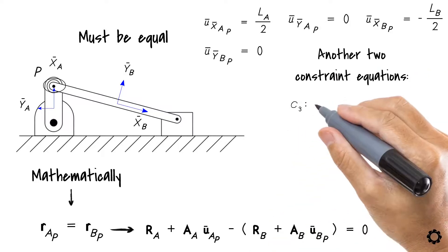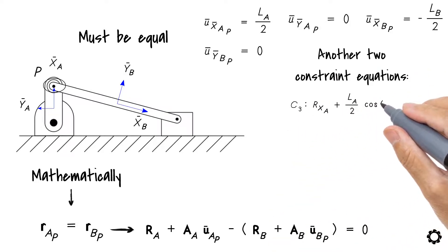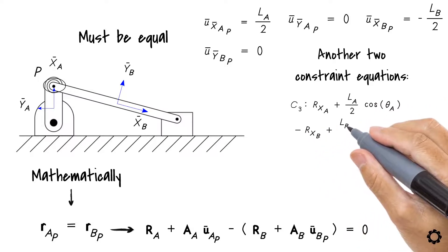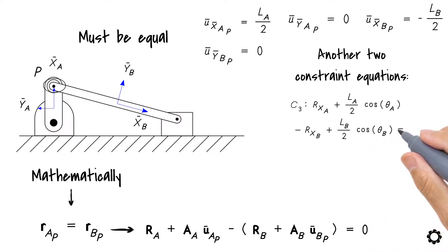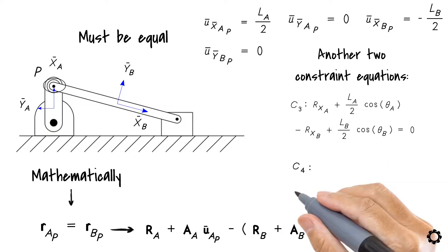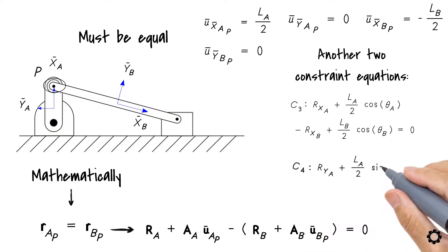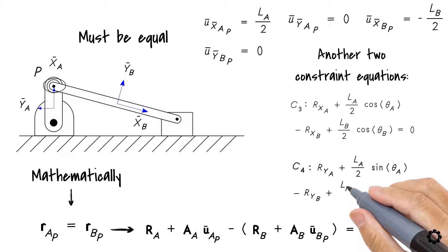C3 is Rxa plus LA by 2 cos theta A minus RxB plus LB by 2 cos theta B equals zero. C4 is RYA plus LA by 2 sin theta A minus RYB plus LB by 2 sin theta B equals zero.